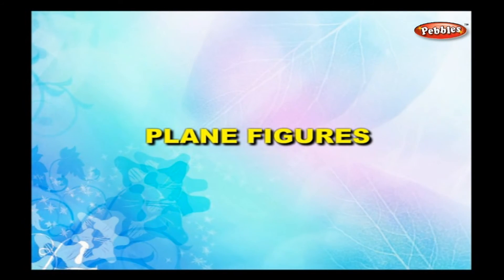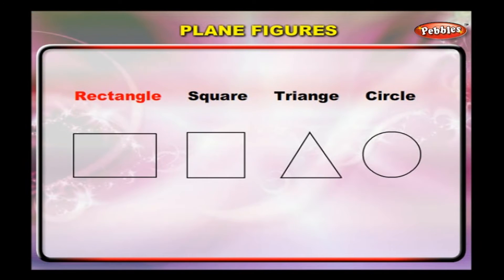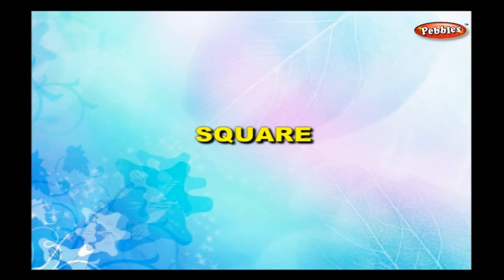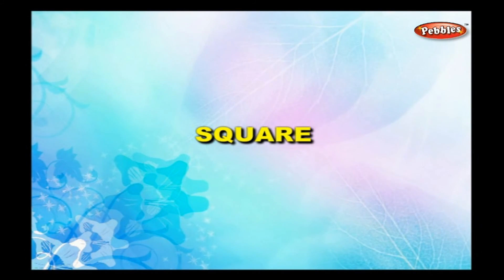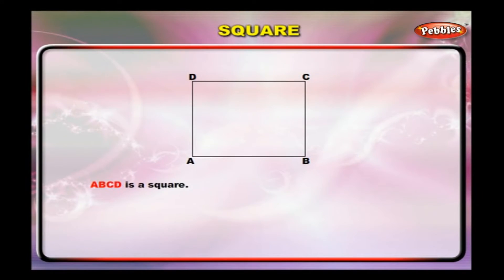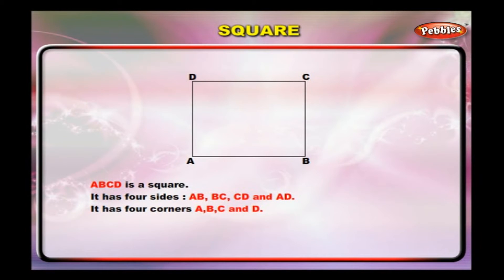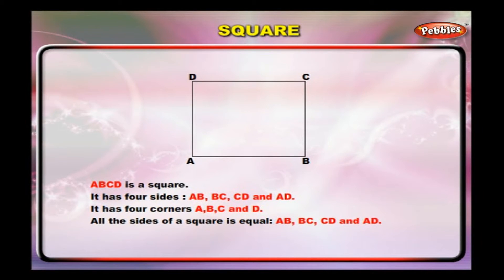Plane figures. A rectangle, a square, a triangle, or a circle are called plane figures. ABCD is a square. It has four sides: AB, BC, CD, and AD. It has four corners: A, B, C, and D. All the sides of a square are equal.